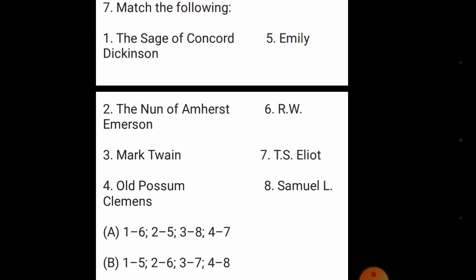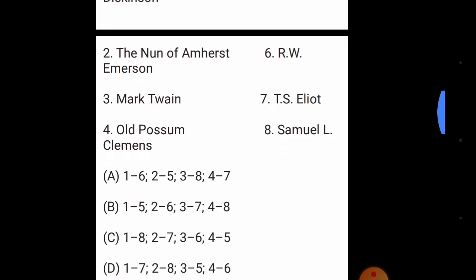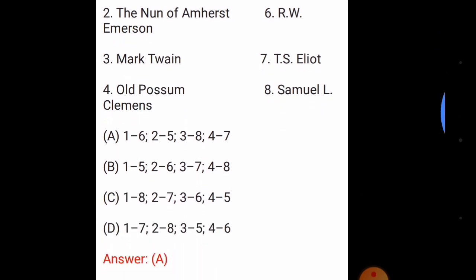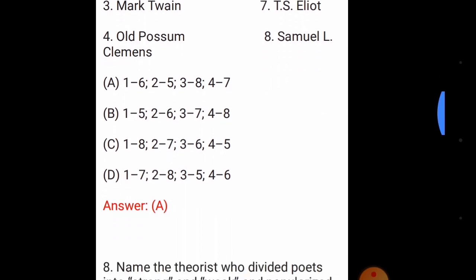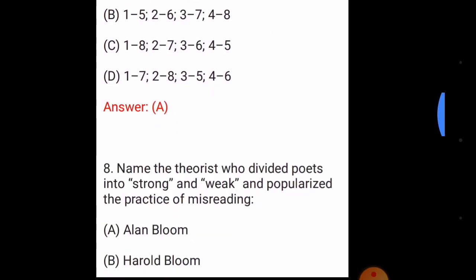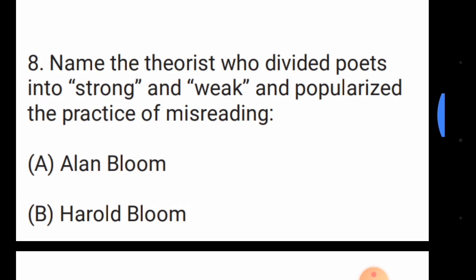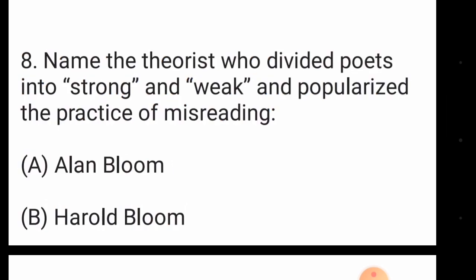The matching pairs are: the Sage of Concord — Emerson; the Nun of Amherst — Emily Dickinson; Old Possum — T.S. Eliot; Mark Twain's real name — Samuel Clemens. The answer is option number A.